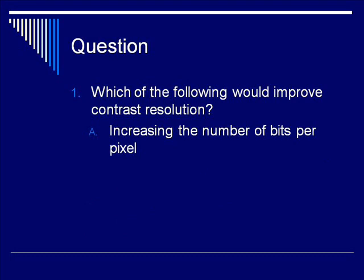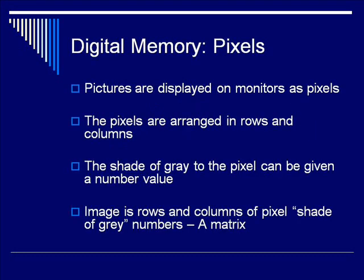This is a really important point, so if you didn't get that answer, you may want to skip back earlier in the lecture and re-listen to this segment. Contrast resolution is how close different objects can be in shade and still be able to tell them apart. It is primarily a factor of the number of shades of gray, which is a factor of how many bits encode each pixel.